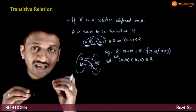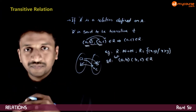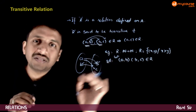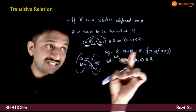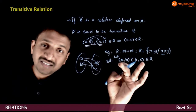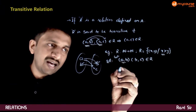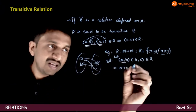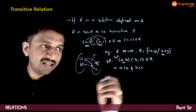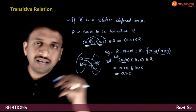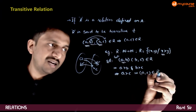Taking as our hypothesis that (A, B) and (B, C) both belong to R, can we confidently say that (A, C) also belongs to R? Since (A, B) belongs to R, we have A > B. Since (B, C) belongs to R, we have B > C. So A > B and B > C implies A > C, which means (A, C) belongs to R.